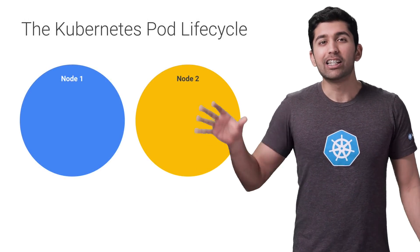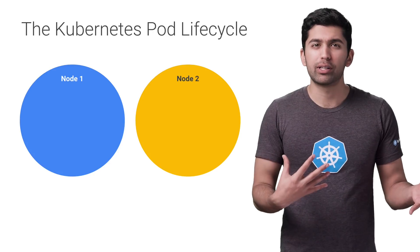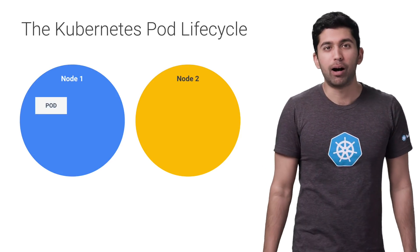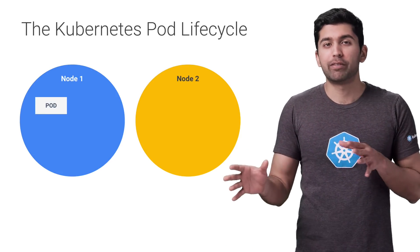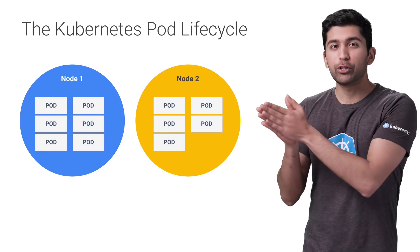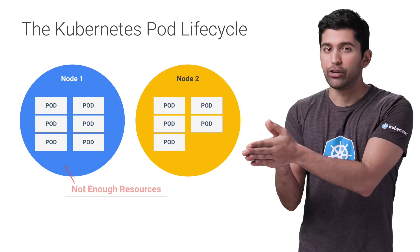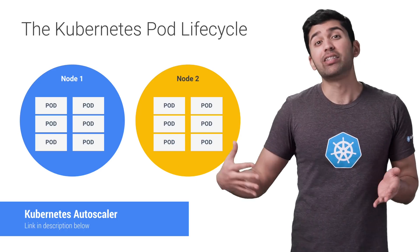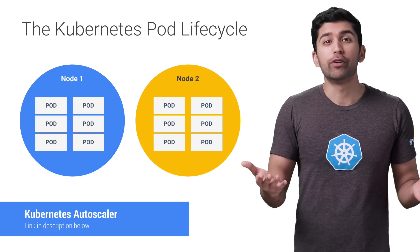At the end of the day, resource requests are used by the Kubernetes scheduler to run your workloads, and it's important to understand how this works so you can tune your containers correctly. When you run pods on your cluster, assuming the pod specifications are valid, the Kubernetes scheduler uses round-robin load balancing to pick a node. It checks if the node has enough resources to fulfill the request on the pod's containers; if not, it moves on to the next node. If no nodes have resources left, pods go into a pending state. GKE's node autoscaler can automatically detect this and create more nodes, and scale down when there's excess capacity to save money.